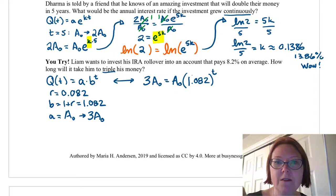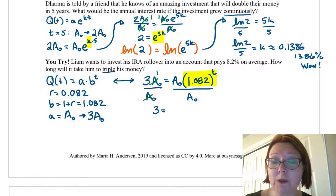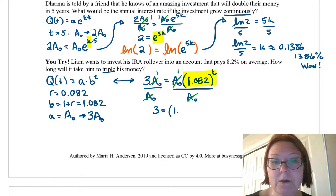Now before we can solve this, we need to isolate the exponential part, which is the 1.082 to the t. So let's divide both sides by capital A sub 0. Now I have 3 capital A sub 0 over A sub 0, those reduce to make 1, giving me just 3 on the left. And on the right hand side, I have capital A sub 0 times 1.082 to the t over capital A sub 0. So again, the A sub 0 is reduced to make 1, and we're left with just 1.082 to the t. Now we have the exponential part isolated.